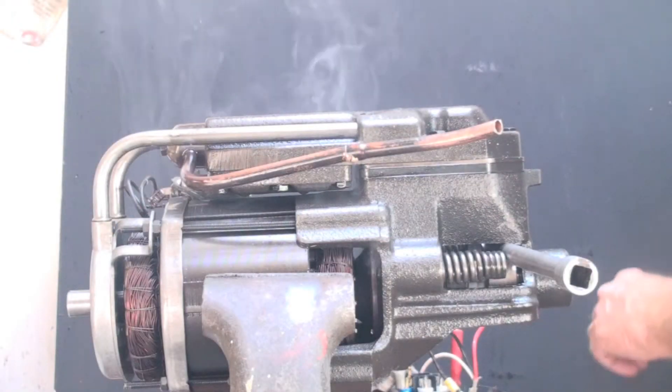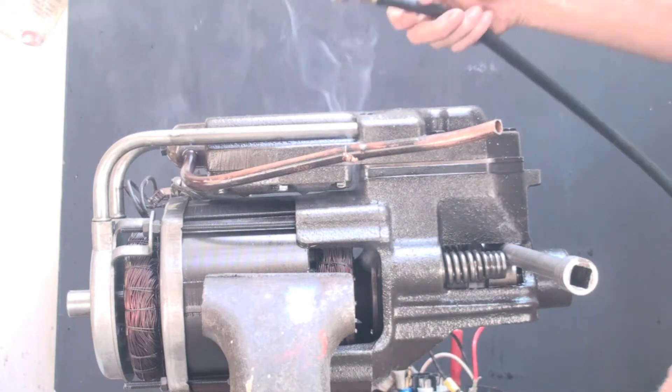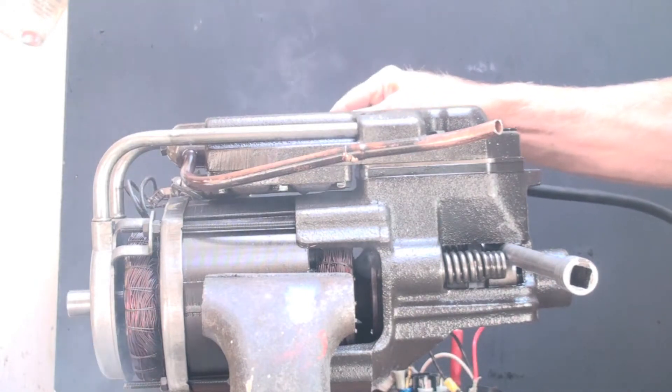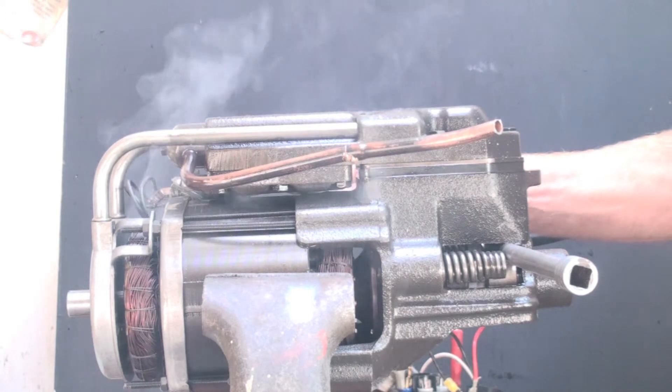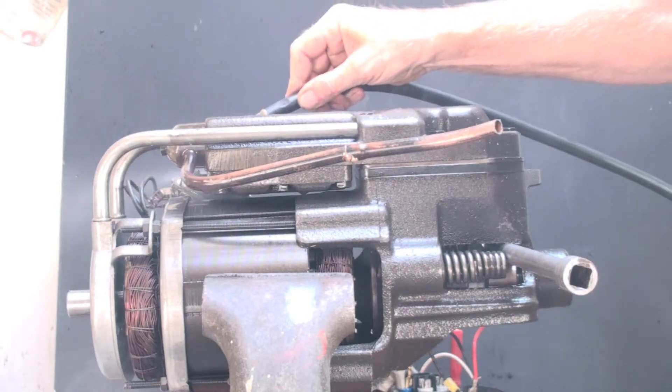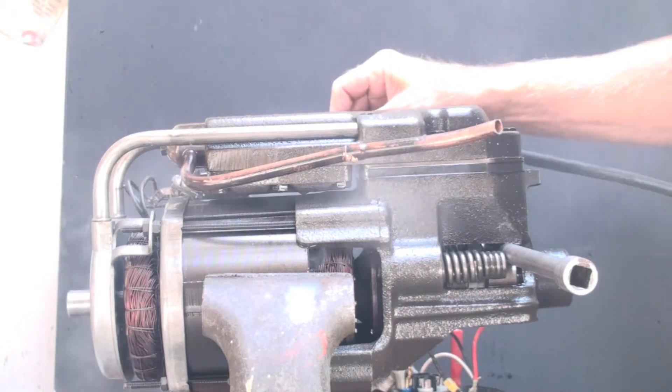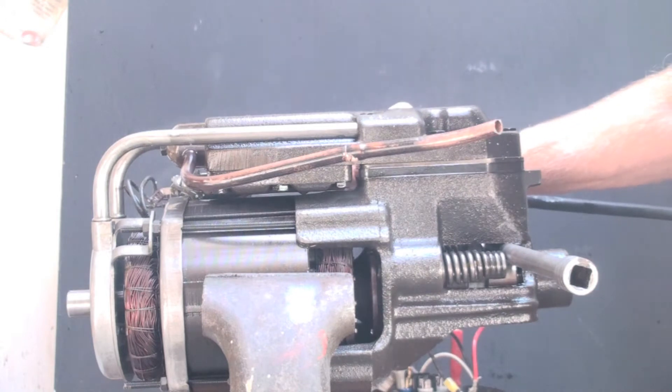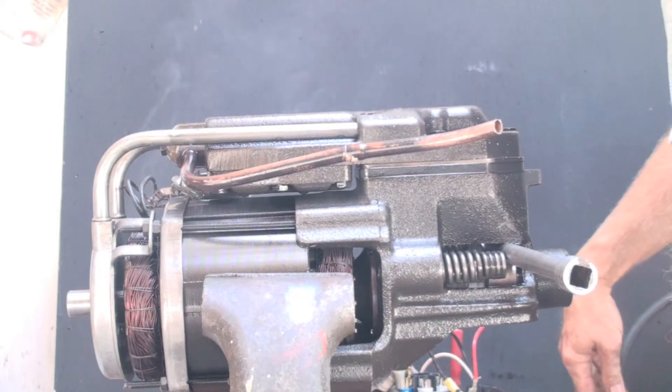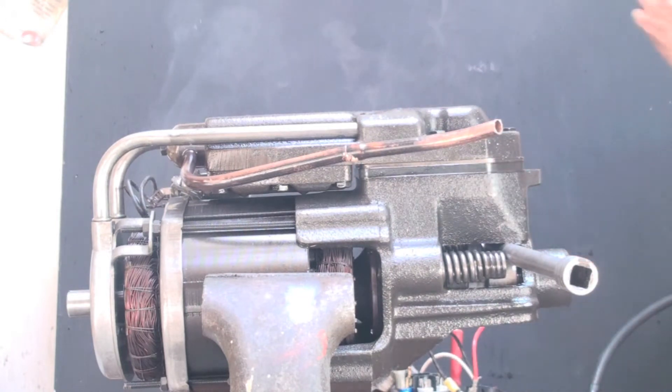Okay, in this one we're going to test this compressor to failure. See, I've already warmed it up quite a bit. I'm cooling down the internal overload on the back side of this thing, and we're going to run this thing lock rotor, no start caps, just run cap and start. We're going to keep running this thing until it gives up.